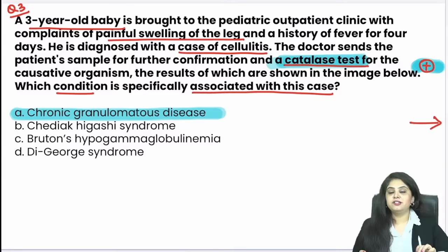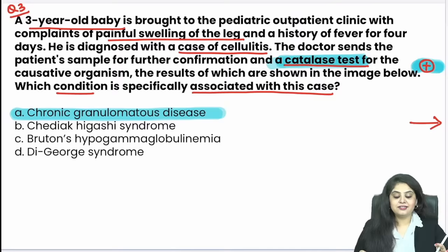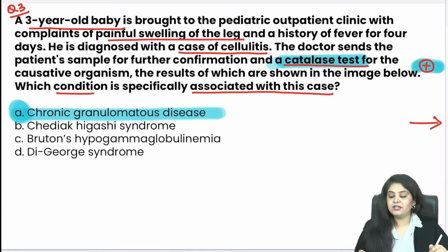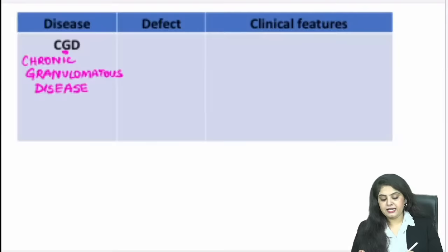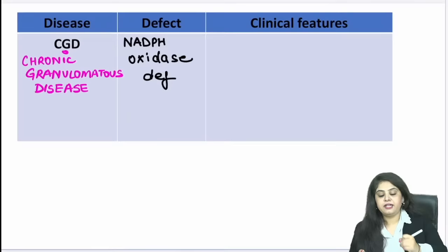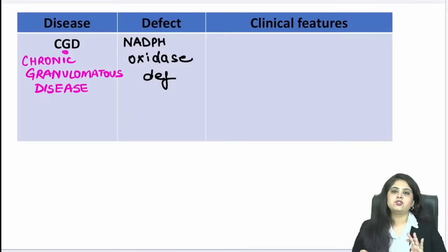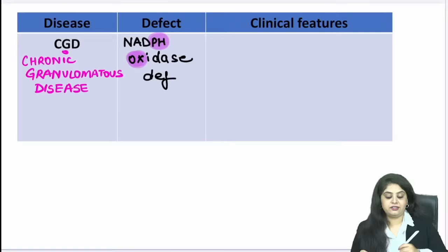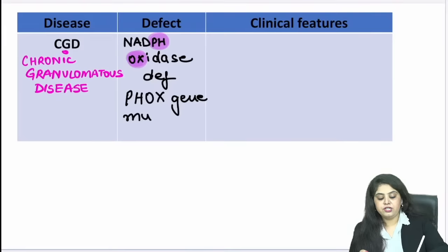A student tagged me on Instagram with a clipping about CGD, which reminded me of a funny mnemonic. When I say CGD, the defect is NADPH oxidase — there is a deficiency of NADPH oxidase. For INICET students, you also need to know the genetics. Take 'pH' from NADPH and 'OX' from oxidase → it is a PHOX gene mutation for chronic granulomatous disease. PHOX = NADPH oxidase.